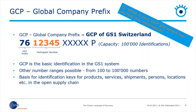With this GCP on the slide — 7, 6, 1, 2, 3, 4, 5 — you are able to create 100,000 GTINs. This number range is according to GS1 Switzerland and will be used for all examples in this presentation. If your own number range is used up, you can request a new additional one.